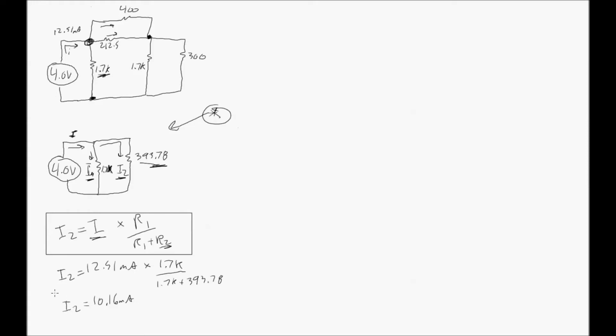So I2, it started off as 12.51 from the power supply. And now after that first branch, it's a little less. This is where that current is. So the current at this point in the circuit is 10.19 milliamps. There's still one more branch to go. It's going to be a lot easier.